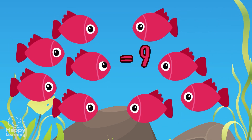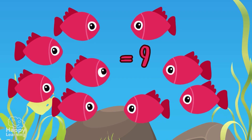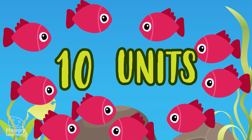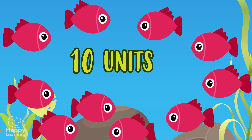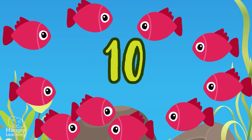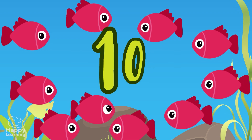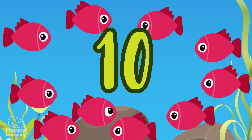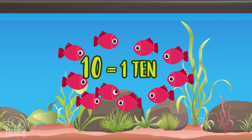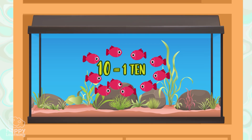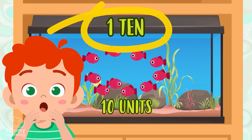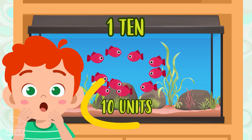Wow, so many fish! One more and we will have ten — ten units! Do you see what happens with the number ten? We now have two digits: the one and the zero. We have a ten, because ten units make a ten! Remember, a ten is a grouping of ten units.